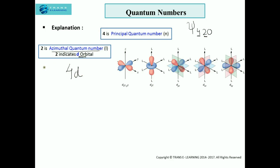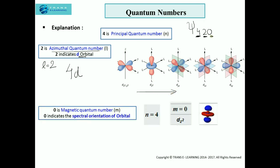This is the reason I have written 4d, because when the azimuthal quantum number is 2, it represents d orbitals. Here are the 5 d orbitals an atom can accommodate. In this question, 0 represents the magnetic quantum number, which represents the spectral orientation of orbitals.